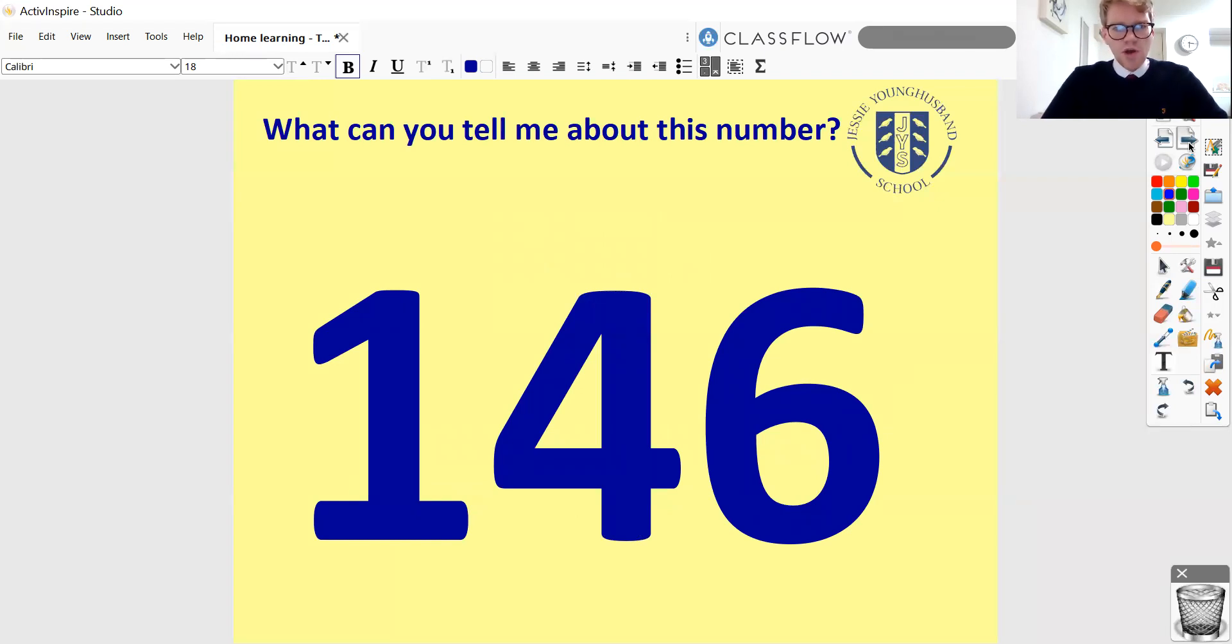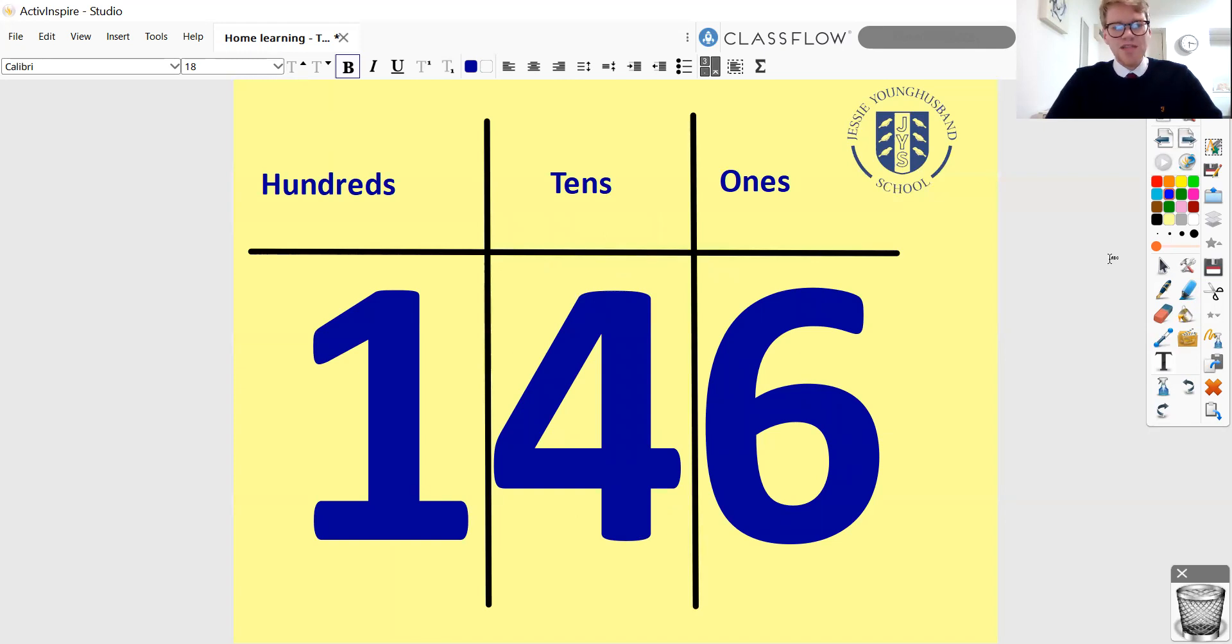So just pause the video here. What can you tell me about this number? It might seem like an obvious question. I'm sure you can tell me what the number is. But can you tell me anything about it and particularly anything about its place value? Pause the video there and see what you can tell me. OK, maybe you said something like this. Maybe you said, well, it's got 100, it's got four 10s and it's got six 1s. Maybe you told me what some of these digits were worth. So, of course, that four is not worth four, it's worth 40. Four in the tens column is worth 40. That one, that digit one, because that's in the hundreds column, that's worth 100. So you might have started talking about that as well.